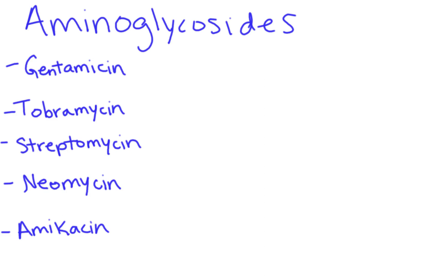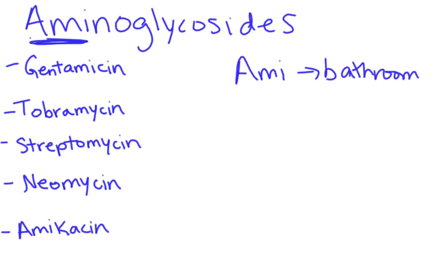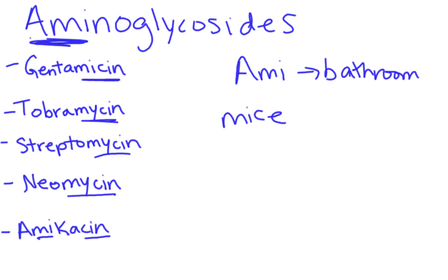In order to remember this, I created a story about Amy — Amy for aminoglycosides — who goes to the bathroom. While she's in the bathroom trying to pee, there are all these mice scurrying around her feet. It's a really sketchy bathroom. All these mice — mycin — are scurrying around her feet. You can remember that most drugs with 'mycin' in the name have to do with aminoglycosides.